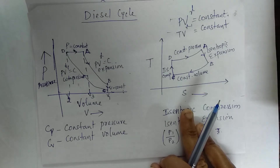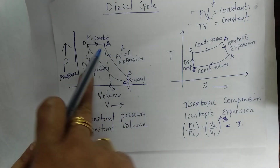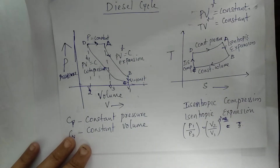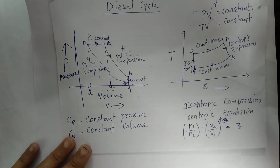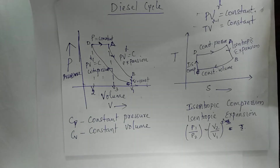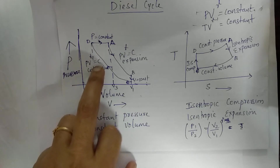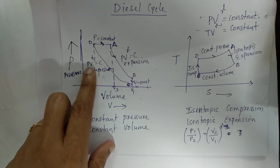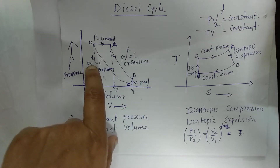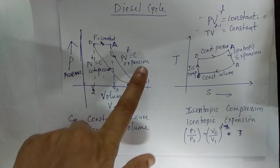This is the relationship. As already mentioned in the petrol cycle video, isentropic and adiabatic can be used interchangeably when the process is reversible. For isentropic compression and expansion, PV raised to gamma equals a constant.